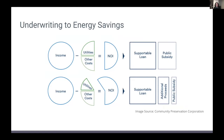The cap rate, which is calculated by taking the NOI and dividing by the market value of the building, ultimately dictates the amount that can be borrowed. The bottom line is that most inputs in the calculation to determine how much can be borrowed are fixed except for the MNO. So if data could prove that passive house projects have lower MNO costs, it could allow for a higher extension of credit.